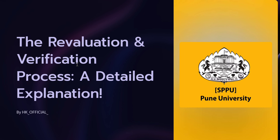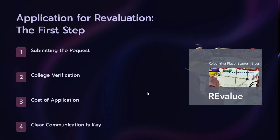The first step is the application for revaluation from the student's side. The first thing you will do is obtain a photocopy of your answer sheet. Key points here include: submitting the request to the college, verification cost of application, and clear communication. First you need the photocopy, then apply for revaluation within five days only.